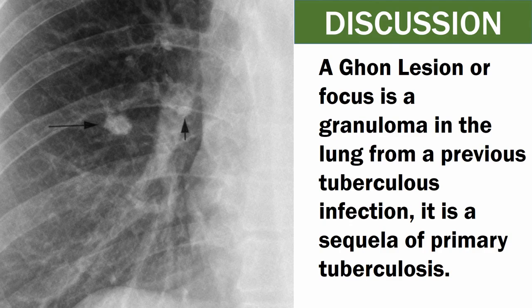A Ghon lesion, or Ghon focus, is a granuloma in the lung from a previous tuberculosis infection. It is a sequela of primary tuberculosis.